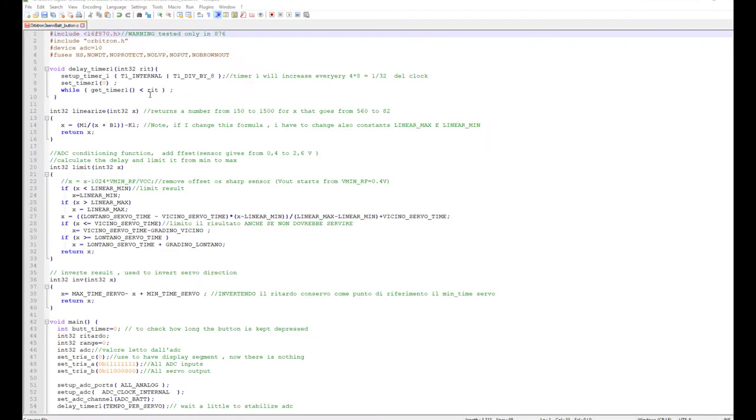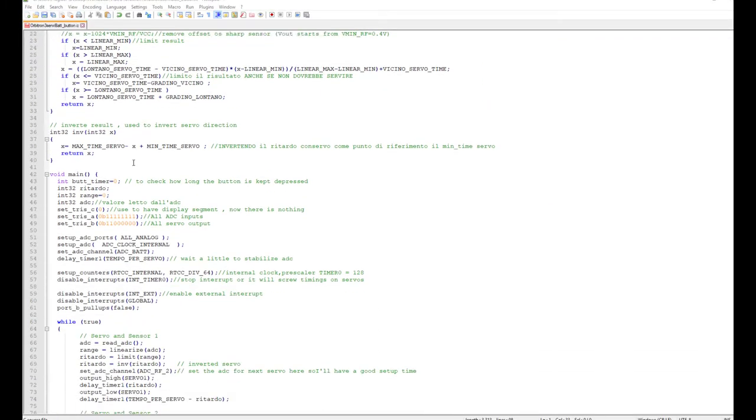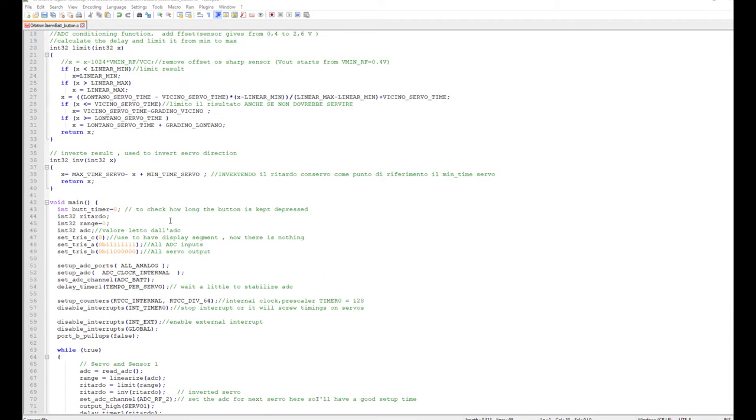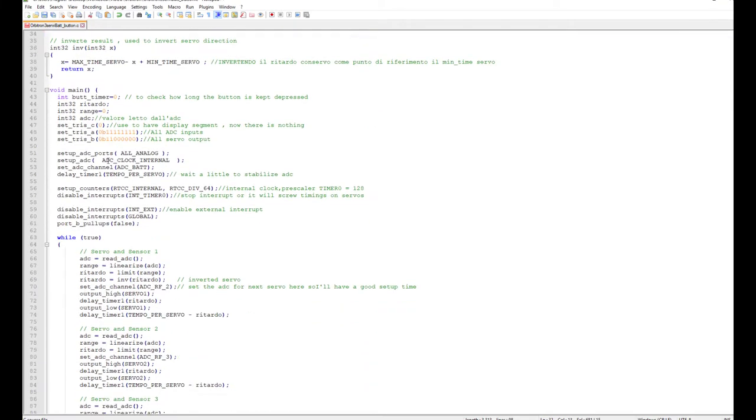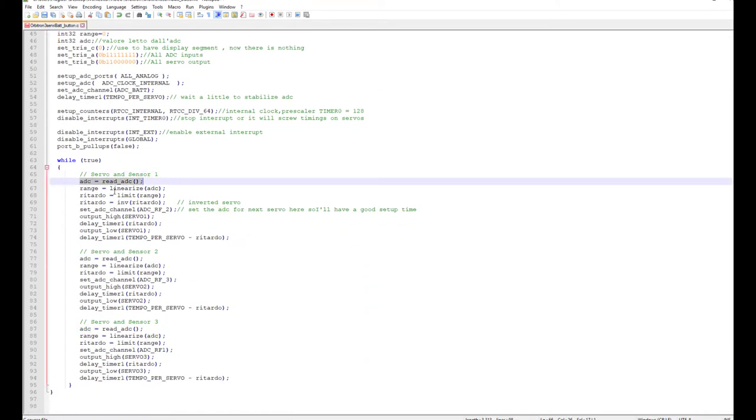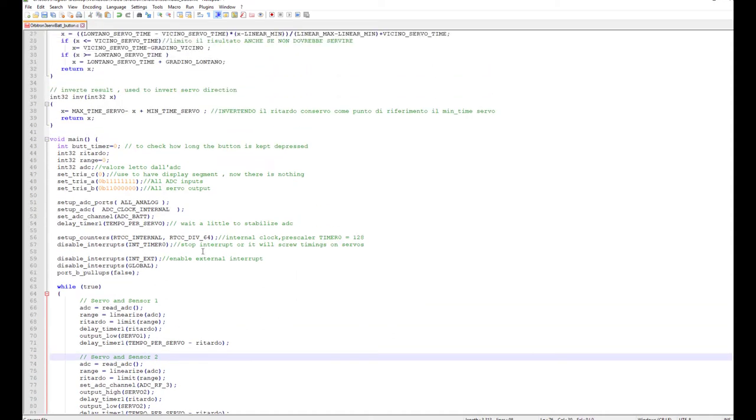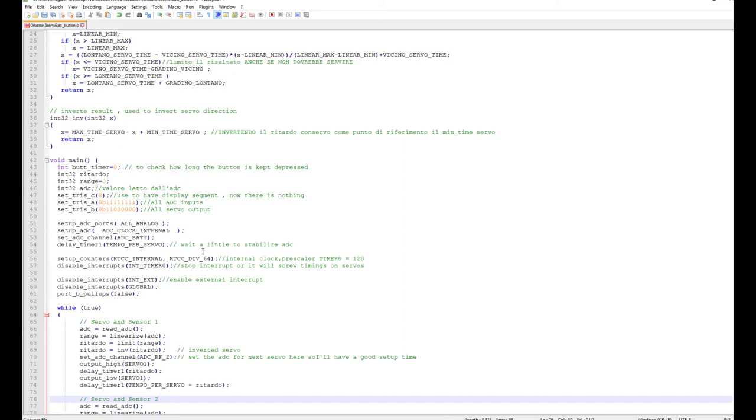The software is also very simple—less than 100 lines—and I think it would be very easy to port to Arduino. The main loop reads the ADC, linearizes the voltage from the sensor, and produces the servo pulse. This is multiplied by three. You could add five sensors if you want, but I found three was the best compromise. I can share this code in the description.